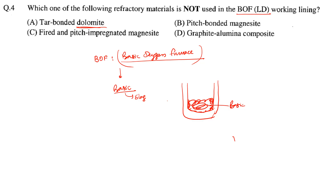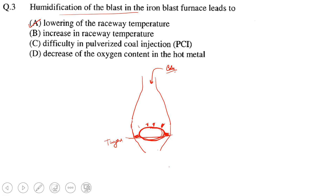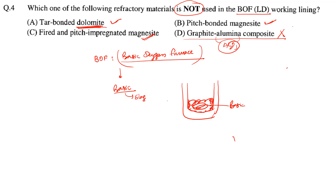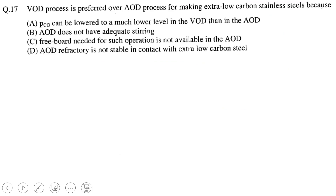Dolomite contains MgO, so it is basic and can be used. Fired and pitch-impregnated magnesite can also be used. However, graphite-alumina composite contains alumina, that is Al₂O₃, and Al₂O₃ acts as slightly acidic. So graphite-alumina composite is not used — that is the answer.